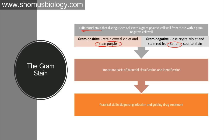In gram staining, two main stains are used: crystal violet (CV) and safranine, along with decolorizing agents. If a cell retains the purple color of crystal violet, it is gram positive. If it retains the counter-stain safranine and appears red, it is gram negative. Gram staining is the foundational basis of bacterial classification and identification — the very first test done when working with an unknown bacterium.